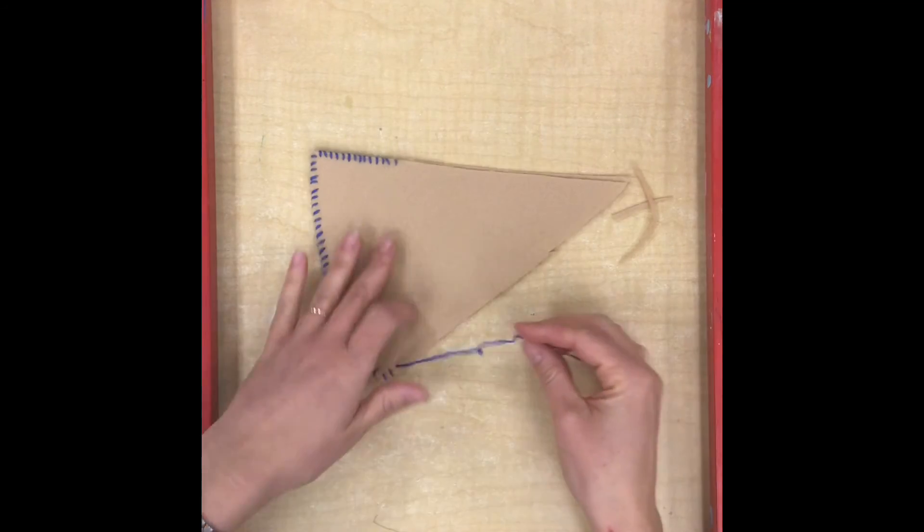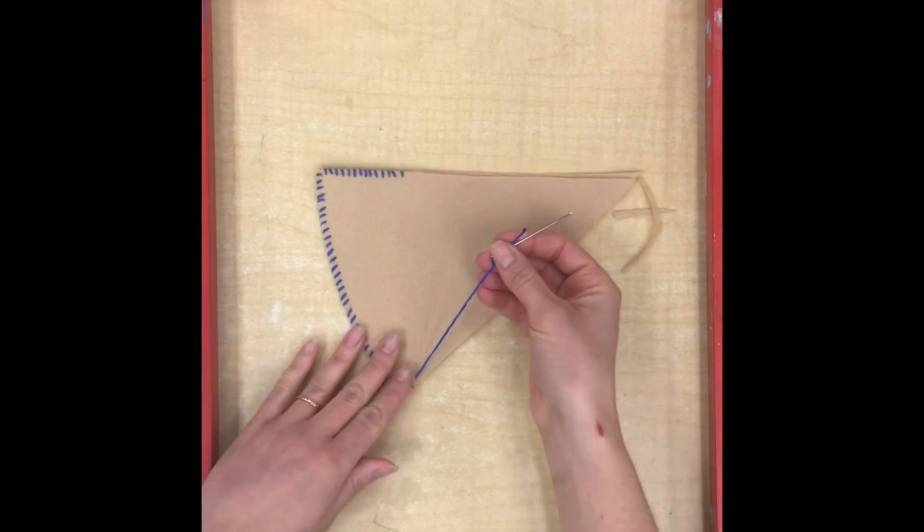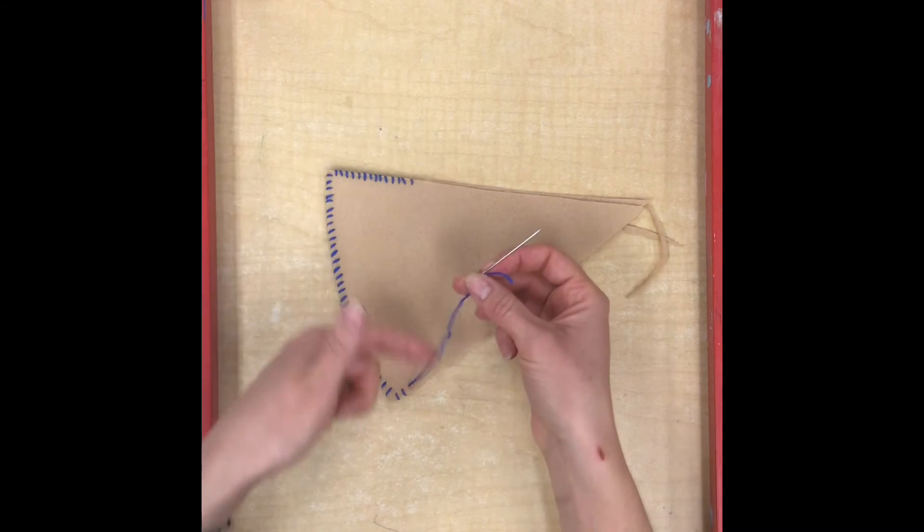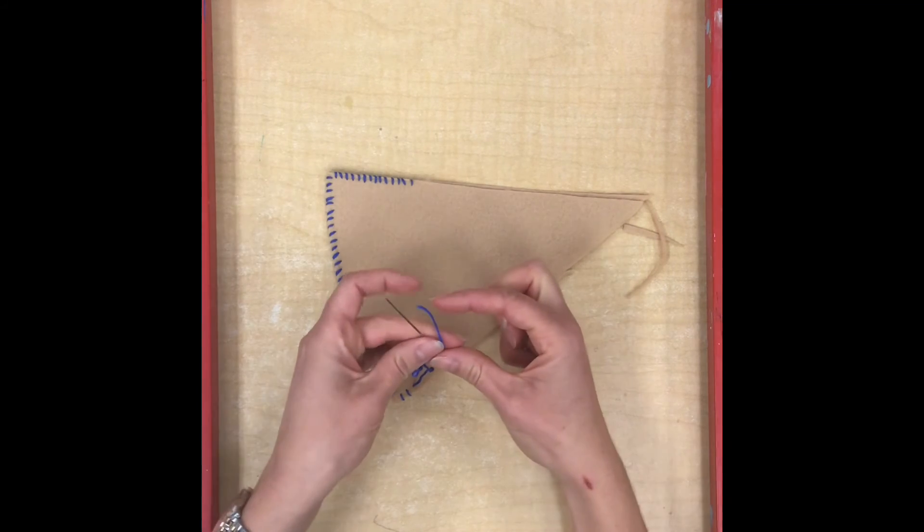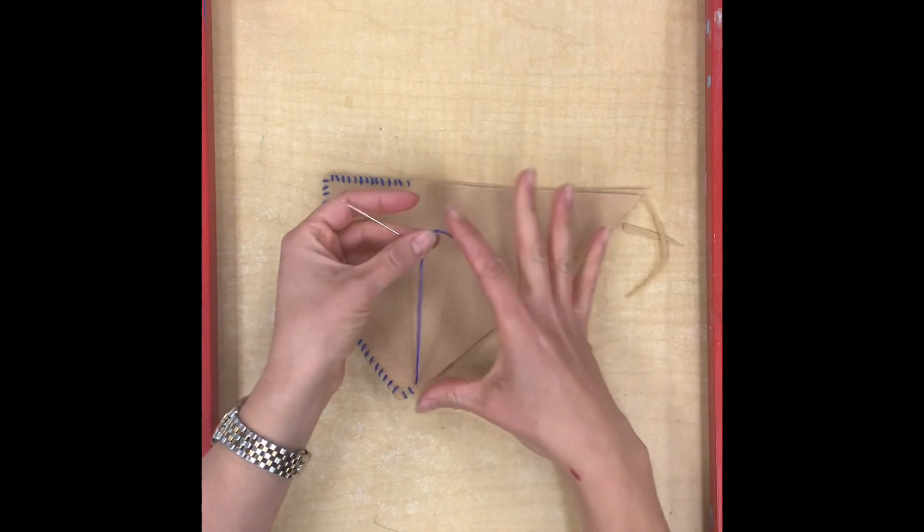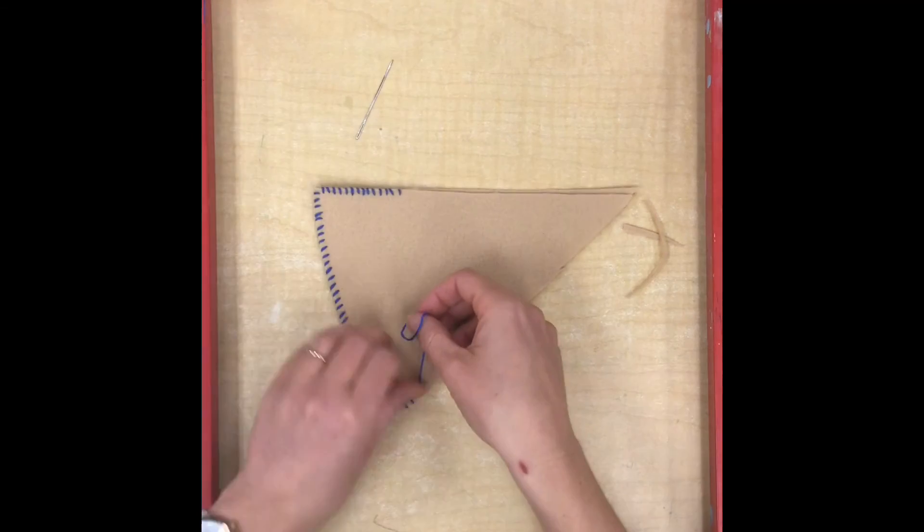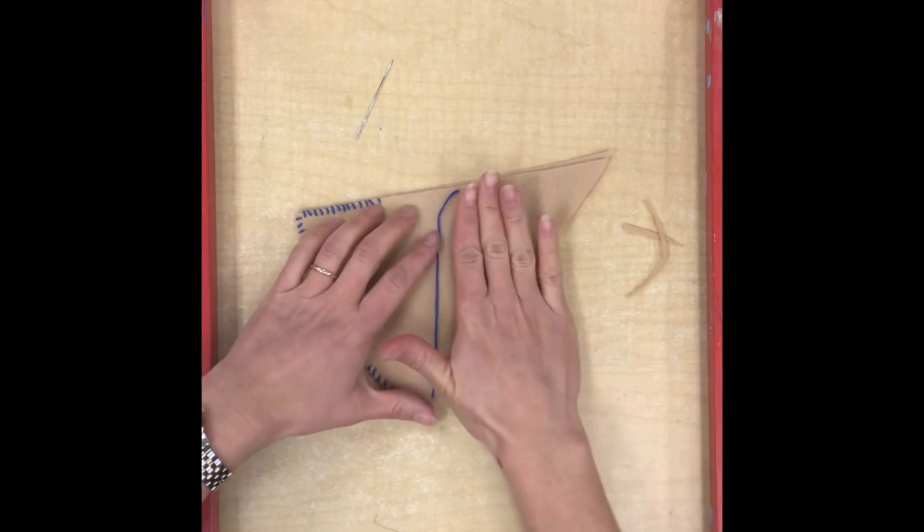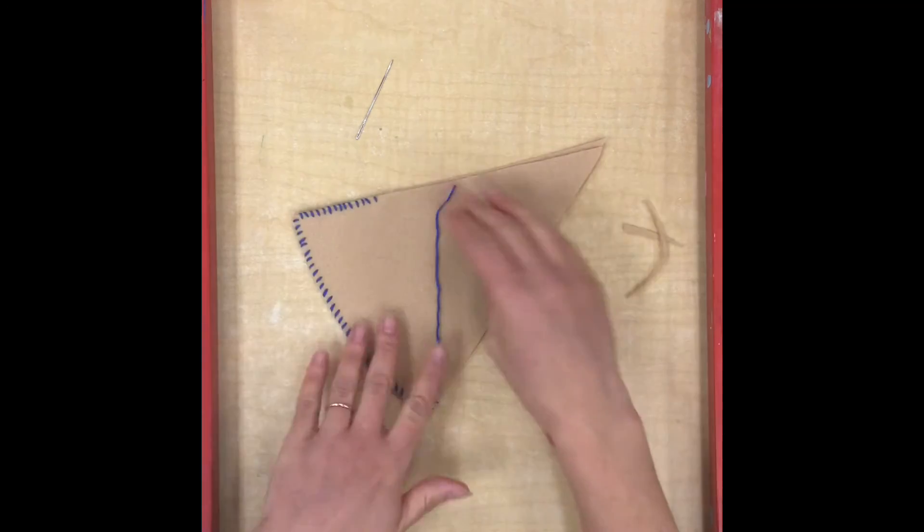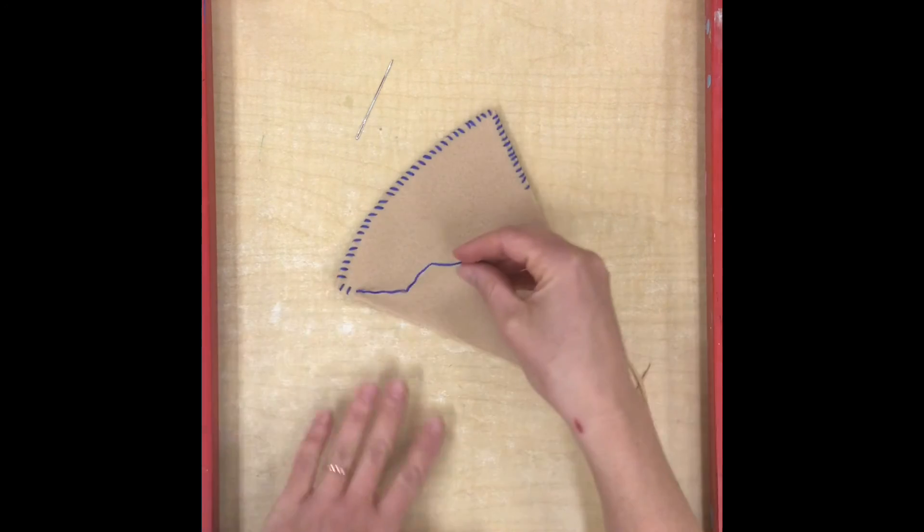Now on this thread that I have right here I'm getting pretty close to the end. You don't want to stitch until you only have a teeny tiny little piece left because we need some thread left so that we can easily tie a knot. So I usually leave about the length of my hand or so so that the knot tying step is easier.